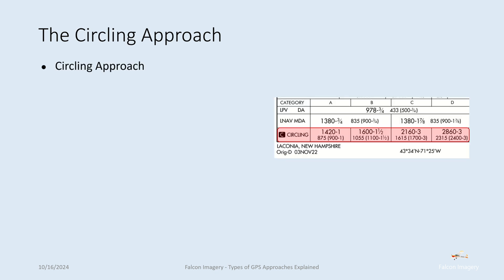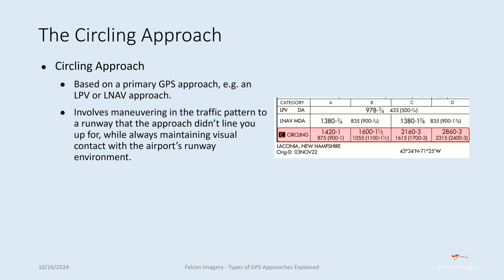With a circling approach, circling approaches can occur with most of these GPS approach types, based primarily on another GPS approach like an LPV or LNAV. It involves maneuvering in the traffic pattern toward a runway that the approach didn't line you up for, while always maintaining visual contact with the airport's runway environment. As a result, circling approaches have higher minimums associated with them than the LNAV or LPV approaches.